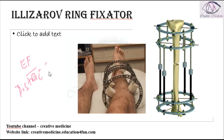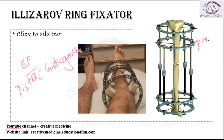The principle of the Ilizarov ring fixator is distraction histogenesis. In distraction histogenesis, rings are fitted around the limb and slowly the fixators are moved at around 1 mm per day. This distraction of the bone at 1 mm per day helps in new bone formation.